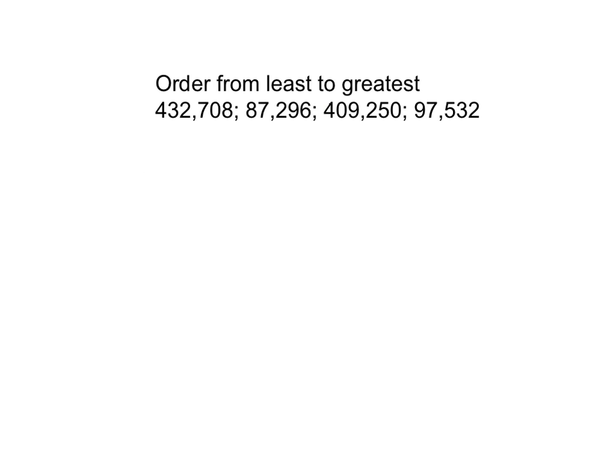Go ahead and copy down this problem. We're ordering from least to greatest, and you'll notice that there is a semicolon in between each of those numbers. Make sure to copy this down correctly and then go ahead and solve the problem. See if you know enough about place values and ordering from least to greatest to find that first number — write down just that first number. Hopefully you wrote down 87,296.